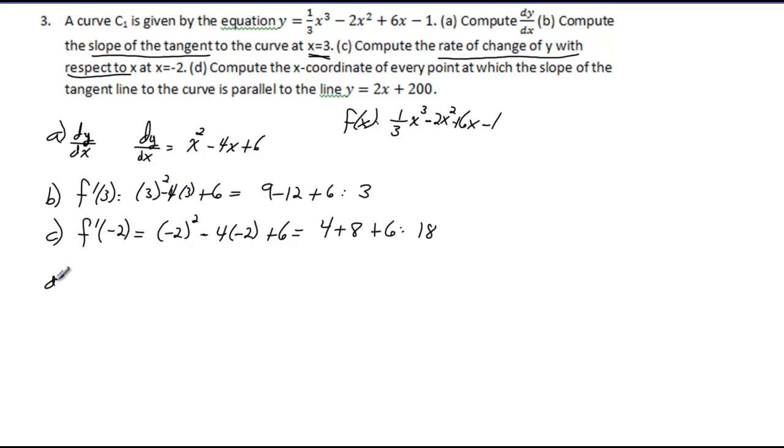Again, very straightforward—take the derivative and plug in a value. Now for part D, we want to find the x-coordinate at every point where the slope of the tangent line